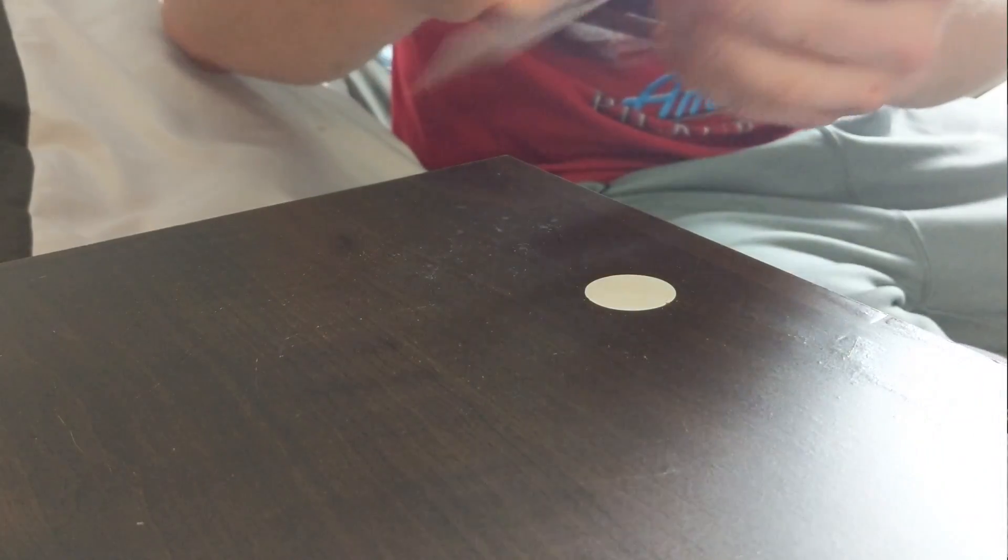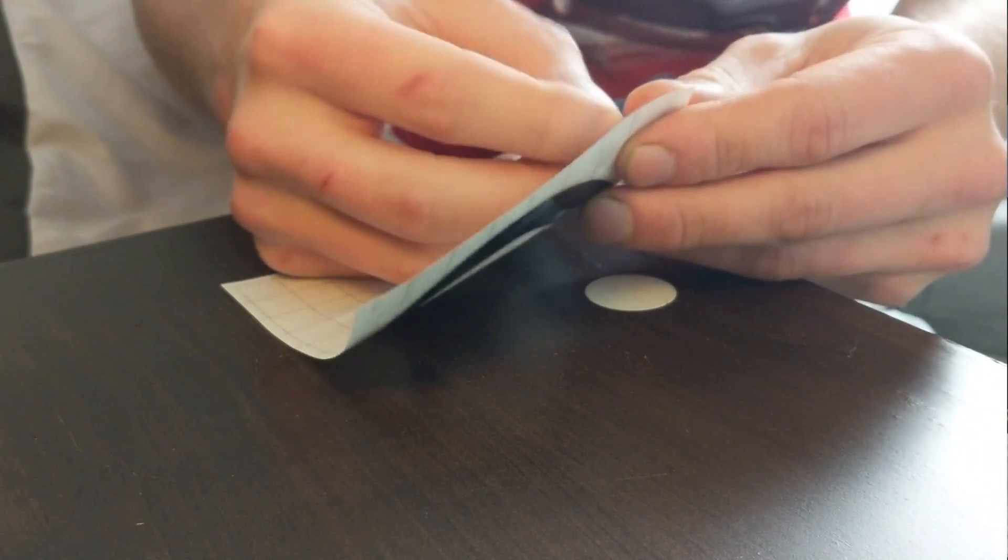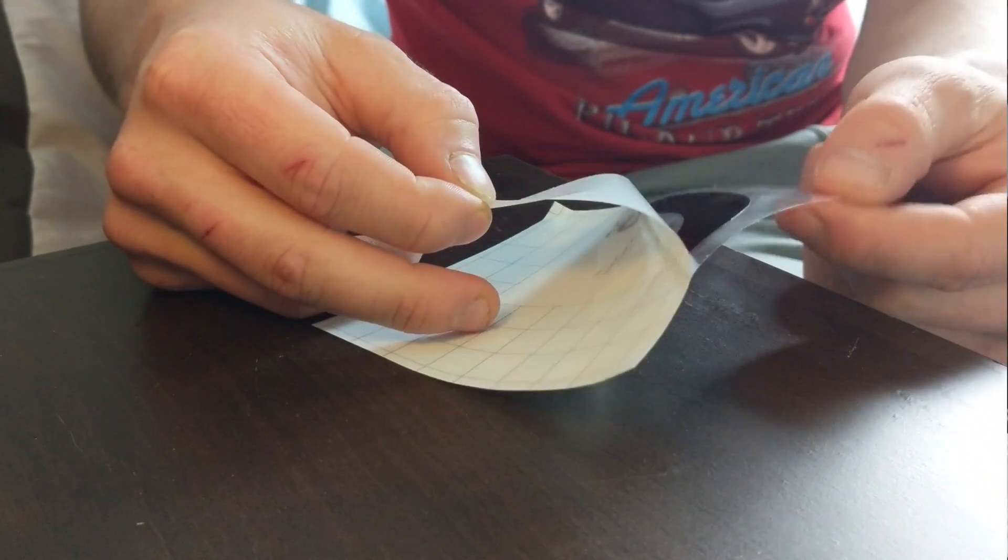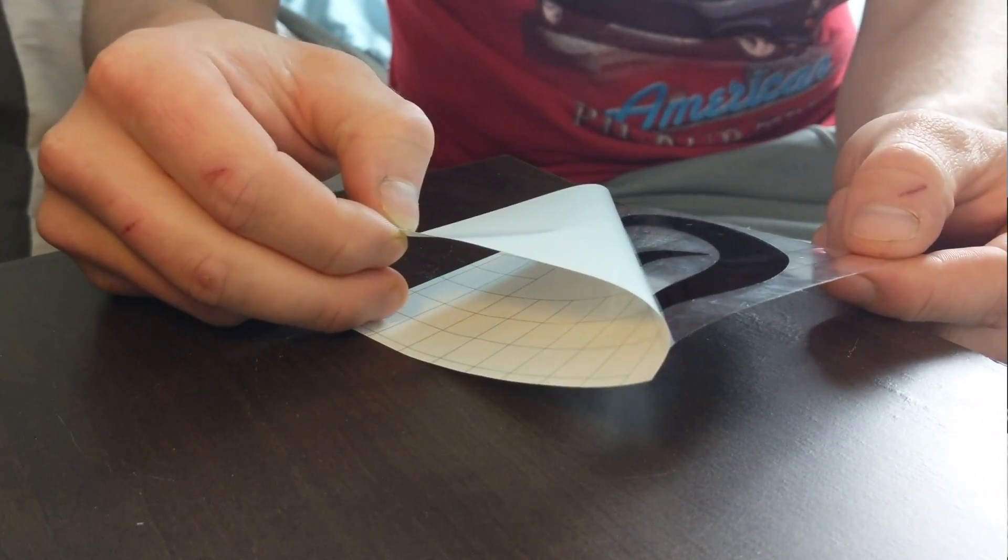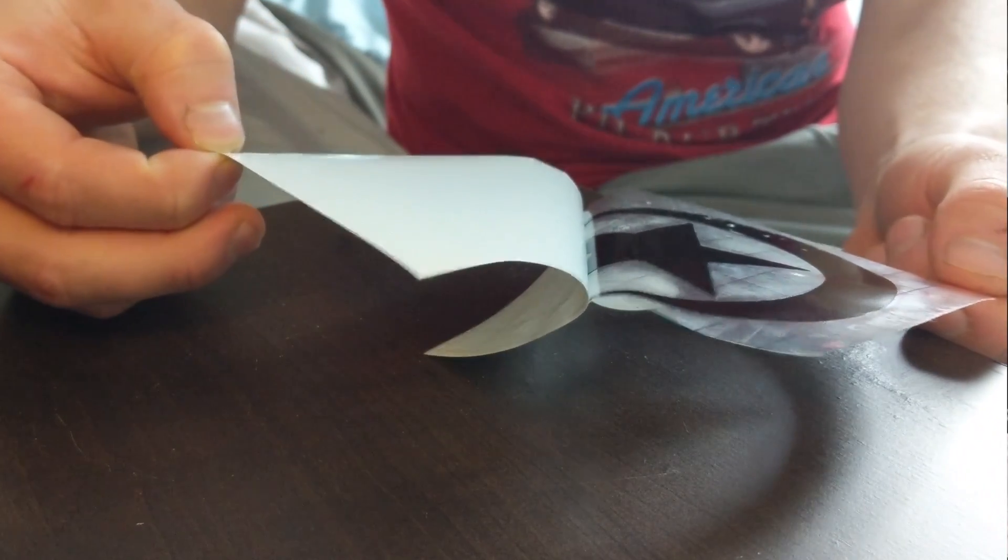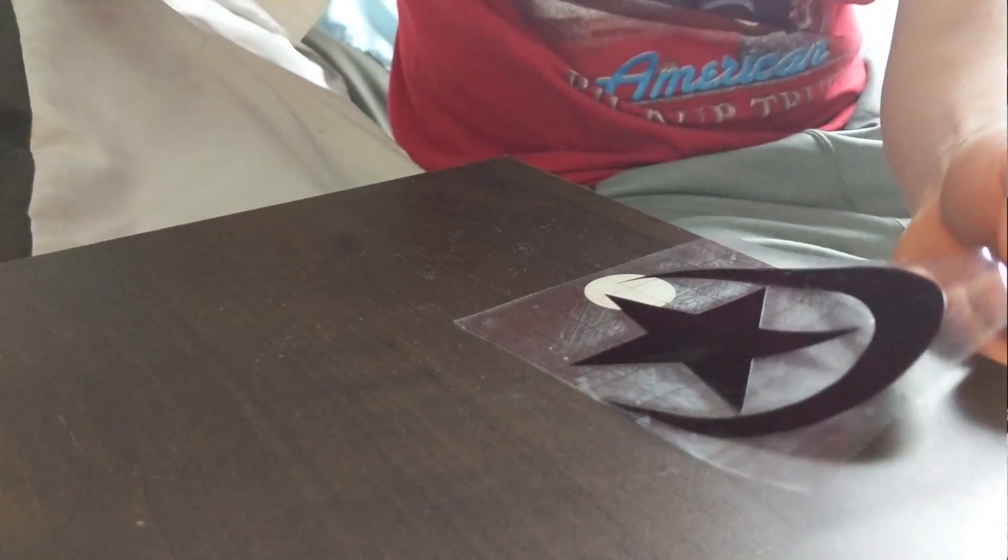It's really simple. You just basically peel off the white backing on the vinyl itself and then make sure that the transfer tape is stuck to the vinyl itself and that it is removed from the white backing completely, just like that.